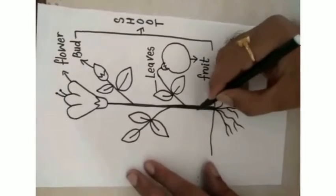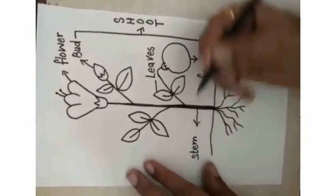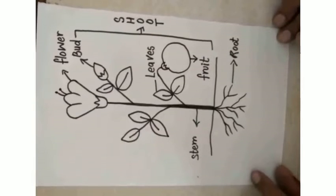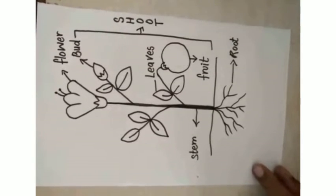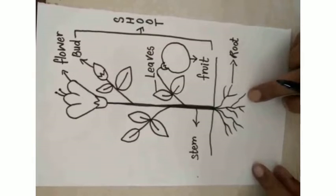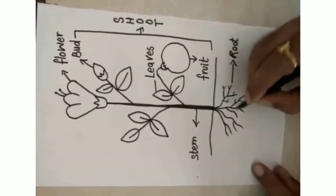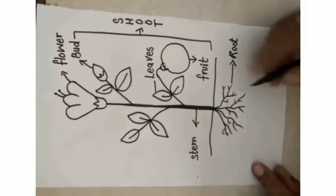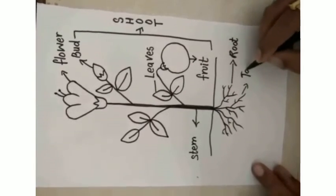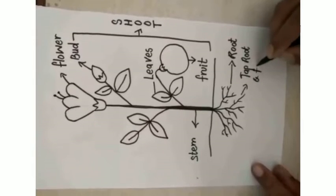And finally this is called as a stem. So this is the parts of plants. This is called as a root, and then it is called as a fibrous root.